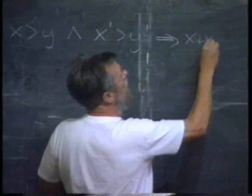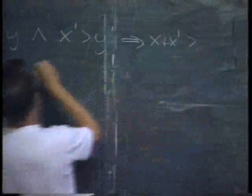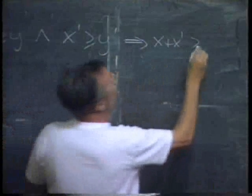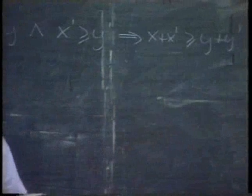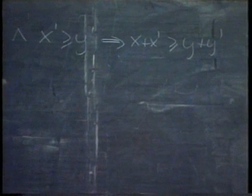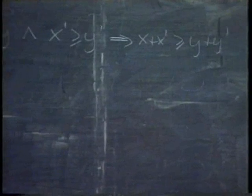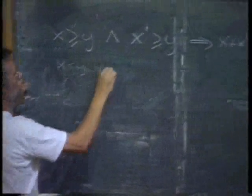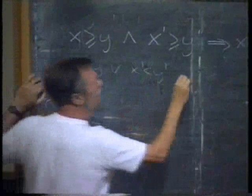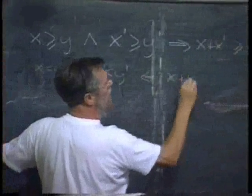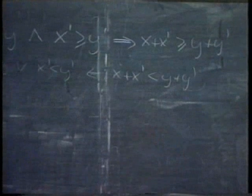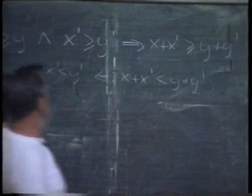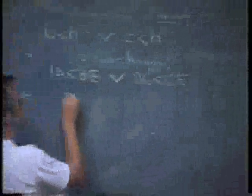X plus X prime is at least Y plus Y prime. Monotonicity of the addition. Write now down the contrapositive of this relation. X less than Y or X prime less than Y prime follows from X plus X prime less than Y plus Y prime. And therefore, here you see the form of exactly this relation, and on account of the monotonicity.